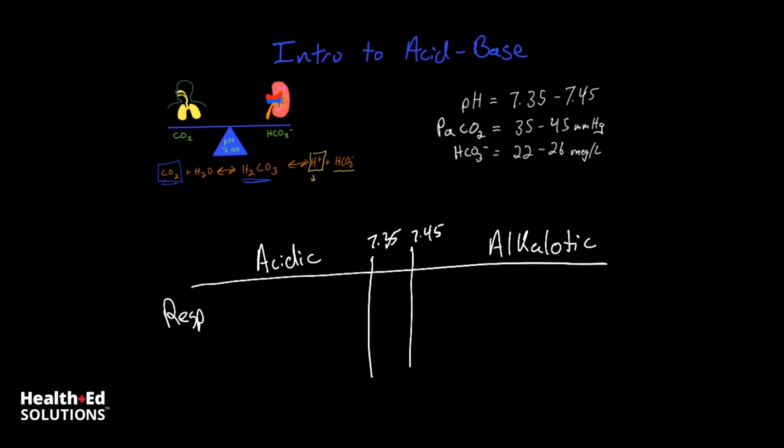And then we're going to have the respiratory values. Anytime a CO2 is greater than 45 millimeters of mercury, it's going to be acidic. Anytime a CO2 is less than 35 millimeters of mercury, it's going to be alkalotic. So this tells us CO2 is going to tell us whether there is a respiratory acidosis or a respiratory alkalosis.